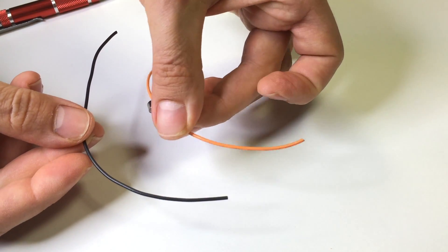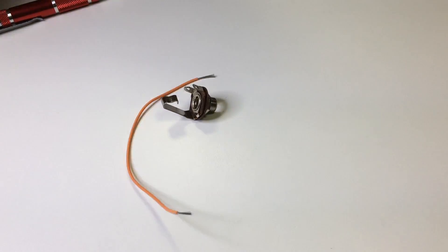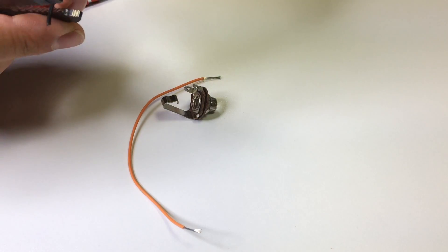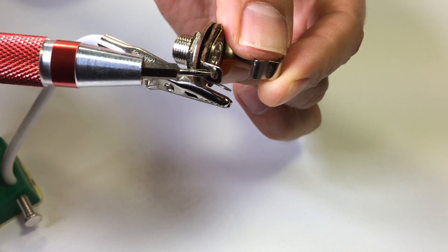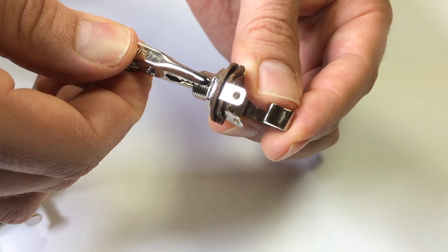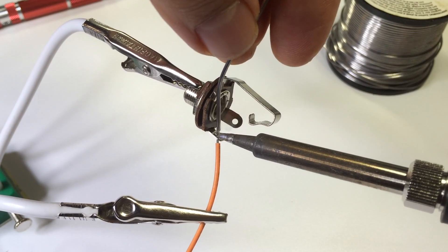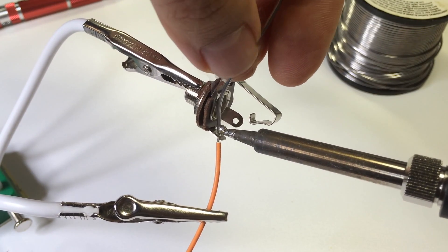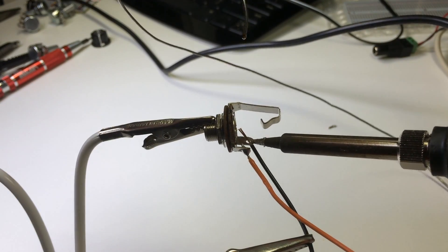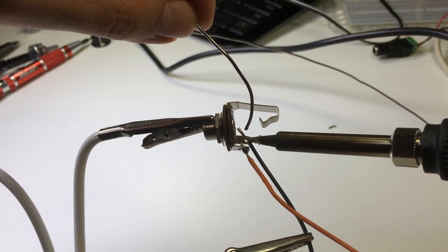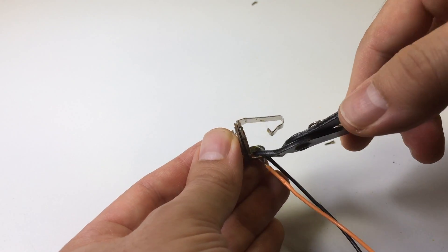Now, cut yourself two 6-inch pieces of 22-gauge stranded wire and strip off the ends. I'm using orange for the positive terminal and black for the negative. Identify the positive tip terminal on your jack and solder the positive wire to it. Now, attach the negative wire to the shield terminal and solder it in place. Finally, clip off the excess wire with your side cutters.